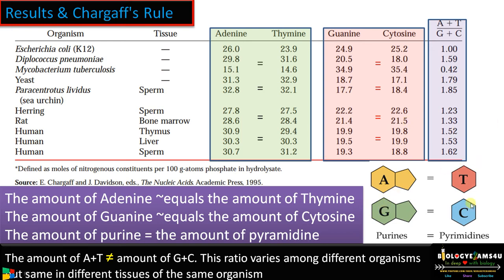The third part is: this ratio is the same in different tissues of the same organism. In humans it is 1.52 in thymus, 1.53 in liver, and 1.62 in sperm. So the ratio of (A+T)/(G+C) is the same in different tissues of the same organism but differs between species. These all together form Chargaff's rule.